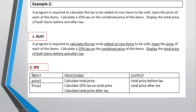Breaking this down into the IPO table: input is price one and price two. For processing, we calculate the total price (combined price of both items), calculate 15 percent tax on total price, and calculate total price after tax. The two outputs required are the total price before tax and the total price after tax.